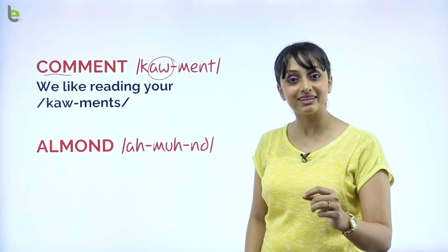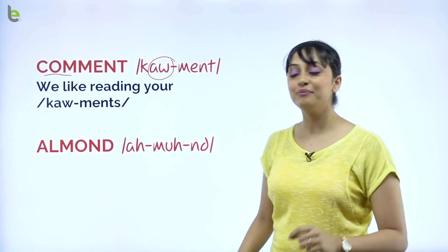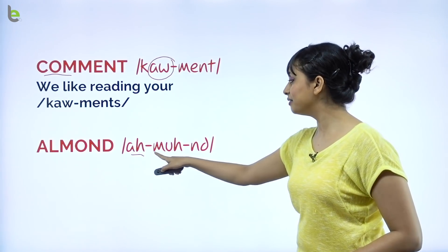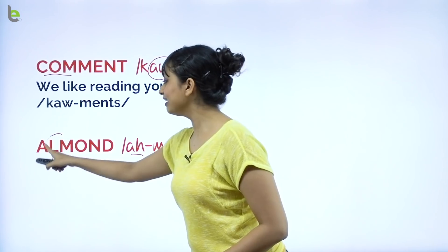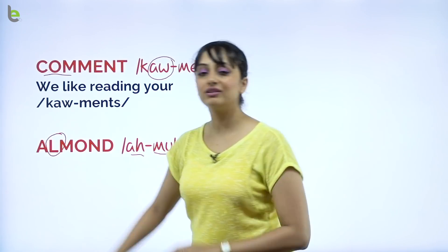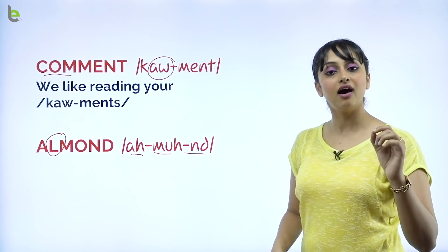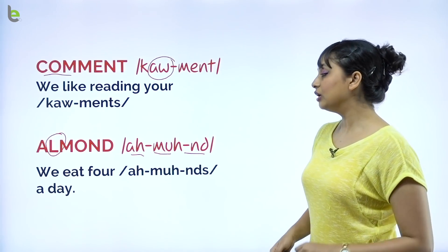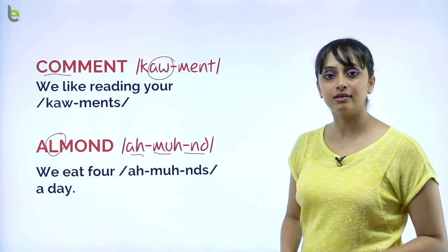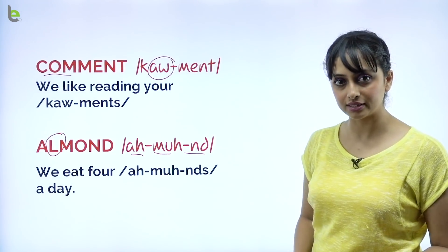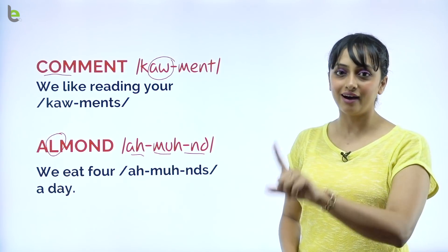Almond. What is the correct pronunciation? Almond. The L is silent. The correct pronunciation is 'ah-mond.' For example: We eat four almonds a day. How many almonds do you eat? Almond — not 'al-mond' with the L sound.